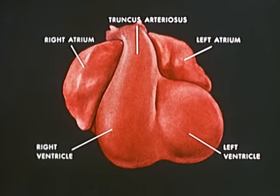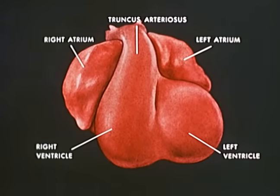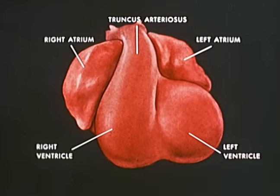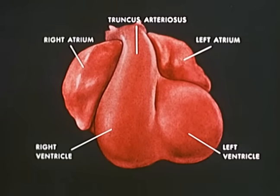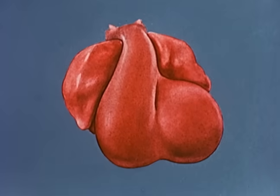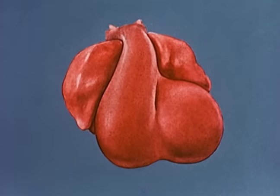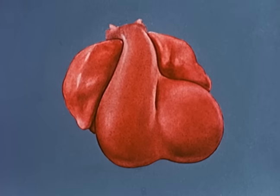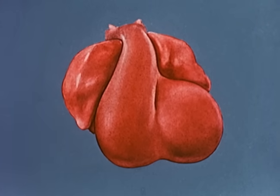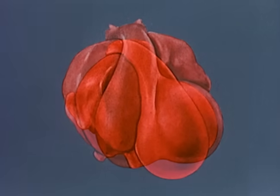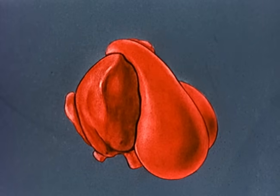A four-chambered heart is formed from this convoluted tube by the development of three septa, partitioning the atria, the ventricles, and the truncus arteriosus. Although these septa develop simultaneously, they will be considered individually. By viewing the heart from the right side, partitioning of the atria and ventricles can be more easily visualised.